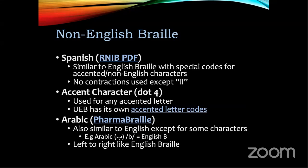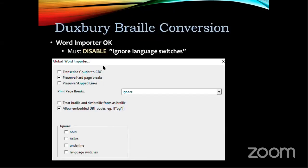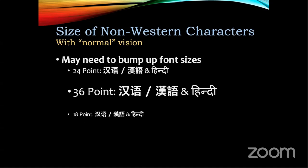Non-English braille depends on language tagging. There are braille specifications for different languages; most are similar to the ones used for English and French — even Arabic braille, where the Arabic 'b' is the same braille character as the English 'b.' When converting from Word to braille using Duxbury, interestingly, by default it tells you to ignore language shifts — you have to uncheck that. Even in accessibility tools, in the U.S. we sometimes default to an English-only world when we shouldn't. Also, non-western characters may need larger font sizes — at 18 point, Chinese characters lose a lot of information whereas English at 18 point is pretty readable.